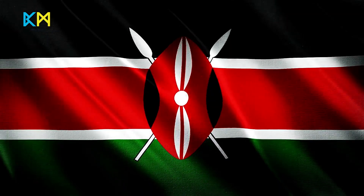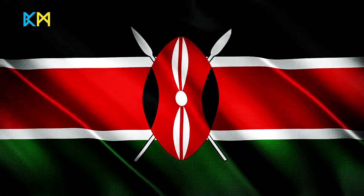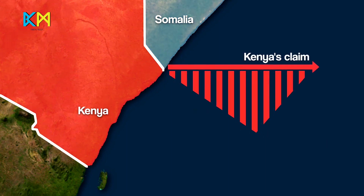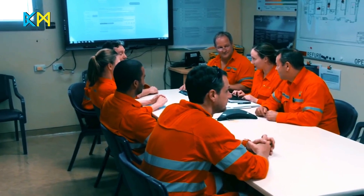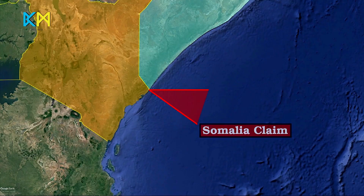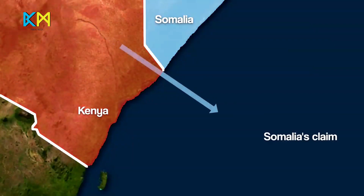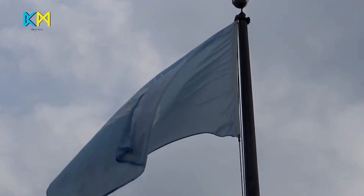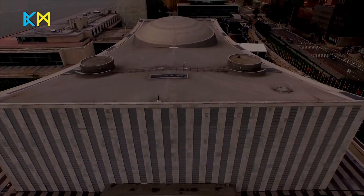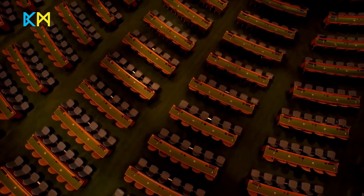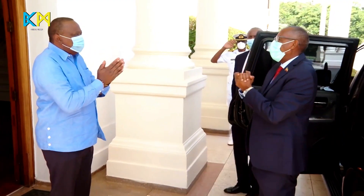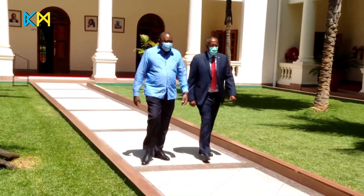Kenya states that the boundary is quite clear, claiming it lies on a line parallel to the line of latitude. That gives Kenya the larger share of the maritime area, and it has already sold mining licenses to international companies. But Somalia disagrees; the Somalis want the boundary to extend to the southeast as an extension of the land border. In 2009, both countries agreed that the United Nations Commission in charge of mediating border disputes should determine the borderline once and for all, and that they should continue working together to avoid going to court.